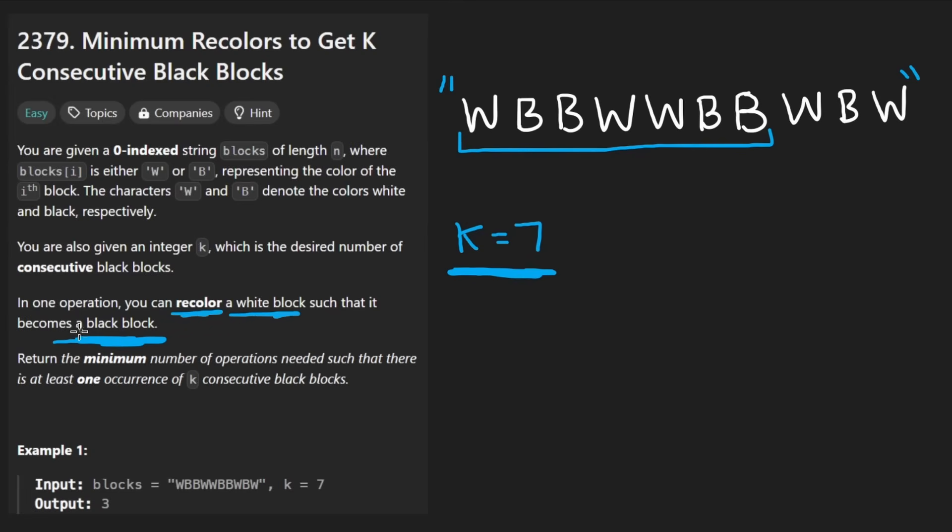For us to take this window and turn it into all black, we can recolor a white to turn it into a black. So how do you do that? How many recolors would it take to make this window all black? Well, all you do is just count the W's in that window.